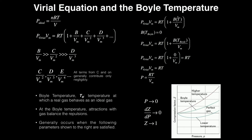Now, in all reality, this B is not necessarily just a constant — it can actually be a function of temperature. One important property to realize is that when the temperature is the Boyle temperature, T sub B, this B term is zero.